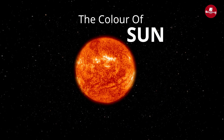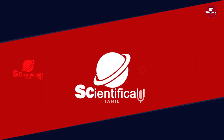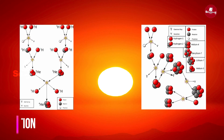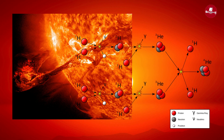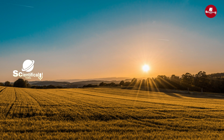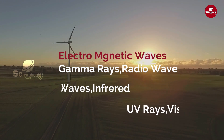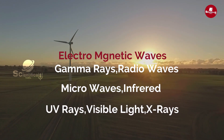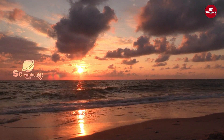Let's see the video. Let's go to the sun. In the sun, the hydrogen and helium atom. The sun emits electromagnetic waves: gamma rays, radio waves, microwaves, infrared rays, ultraviolet rays, visible light, and X-rays, and followed the sun and moon.